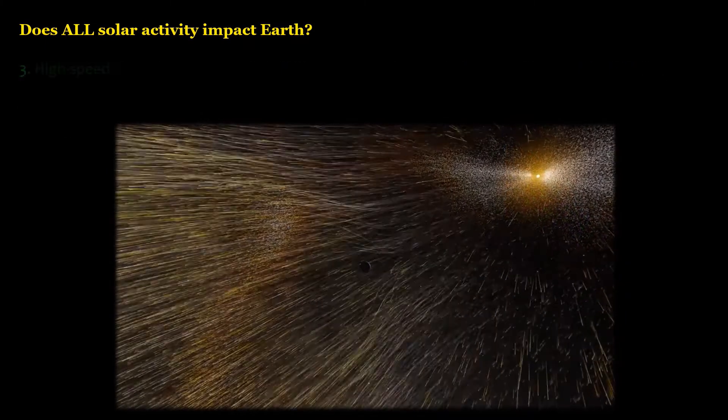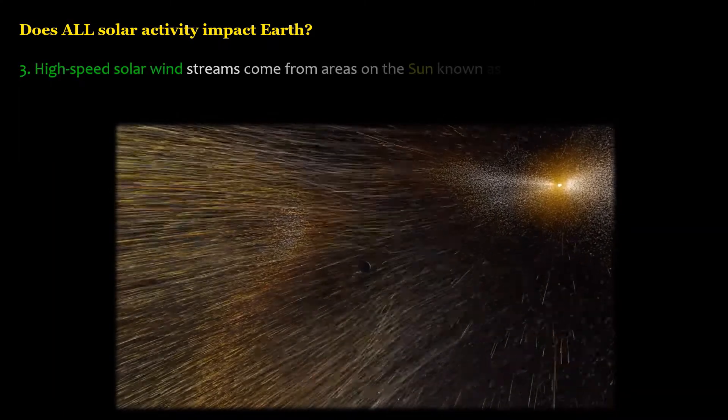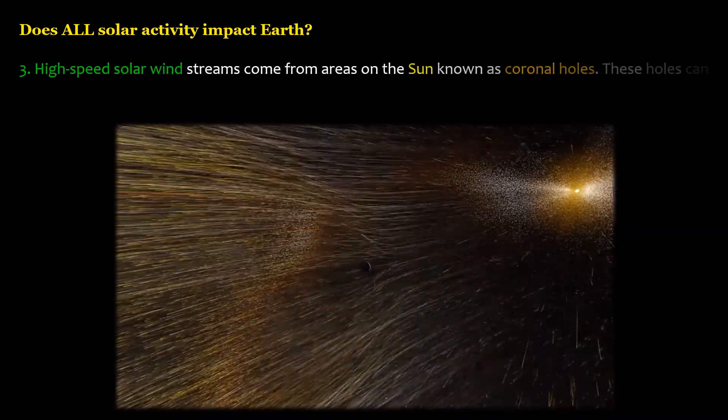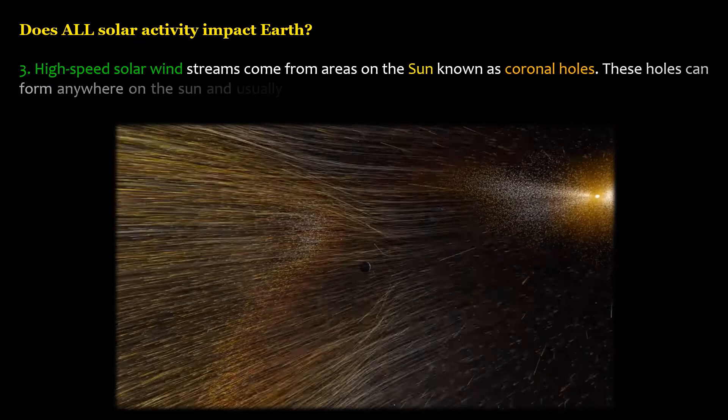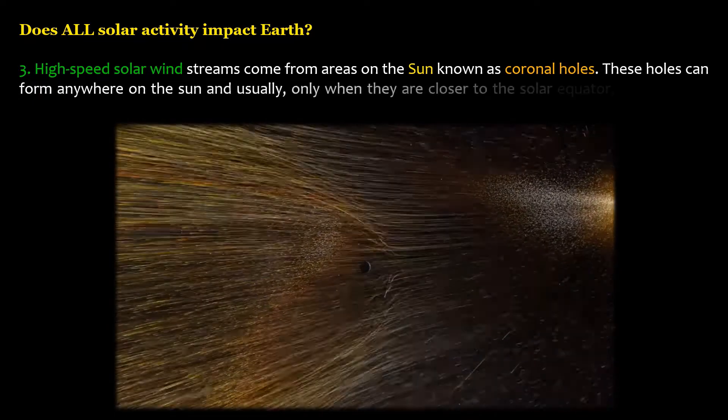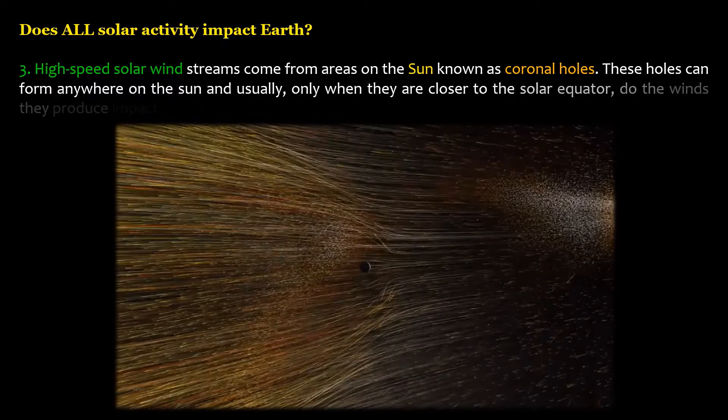High-speed solar wind streams come from areas on the sun known as coronal holes. These holes can form anywhere on the sun and usually, only when they are closer to the solar equator, do the winds they produce impact Earth.